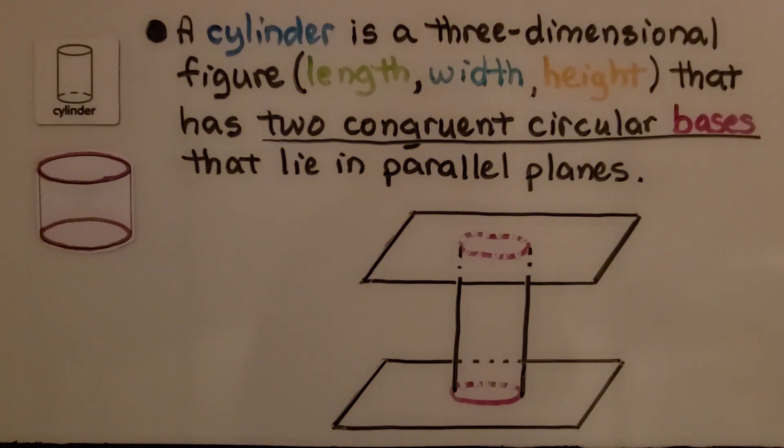A cylinder is a three-dimensional figure—length, width, height, that's the three dimensions—that has two congruent circular bases that lie in parallel planes, just like the can with the cards on top and the bottom.